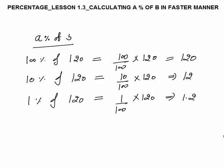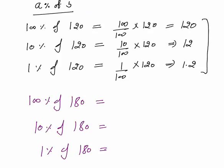This you should be able to calculate verbally without writing — 100 percent, 10 percent and 1 percent. Now suppose I need to calculate 100 percent of 180: that will be 180, the number itself. 10 percent means 1 tenth, that would be 18. 1 percent would be 1 by 100 of 180, which is 1.8. So once you know 10 percent, 100 percent and 1 percent, you can easily calculate A percent of B.